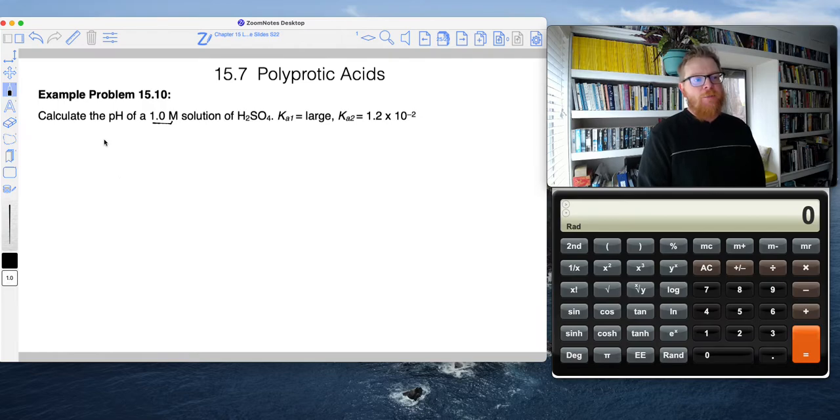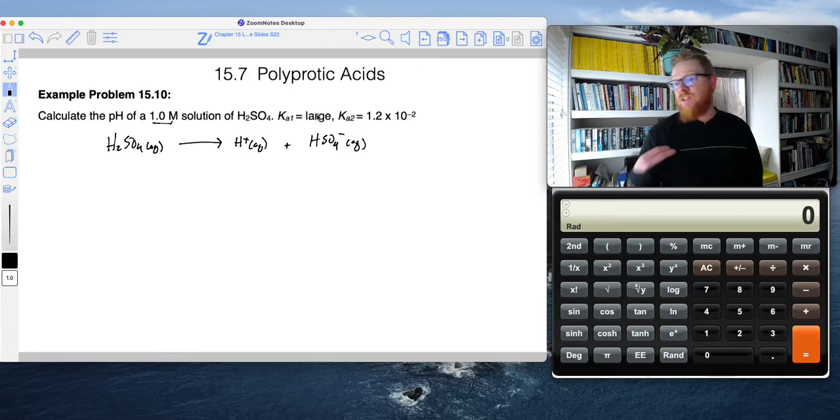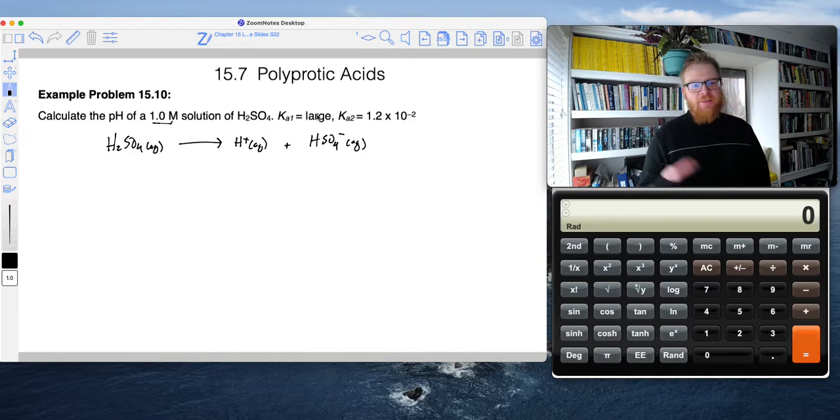We have to consider that the very first proton that sulfuric acid pops off is considered a strong acid. So notice here, I'm just drawing a full equilibrium arrow, which will make our H+ and our bisulfate HSO4-. And notice it says this Ka1 is large. So because it doesn't give a number, it just tells us it's large, that means this thing fully dissociates.